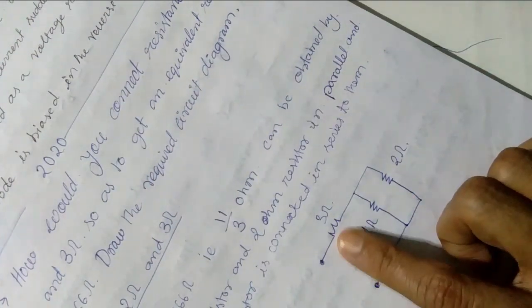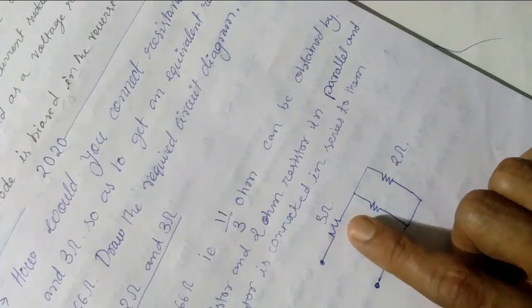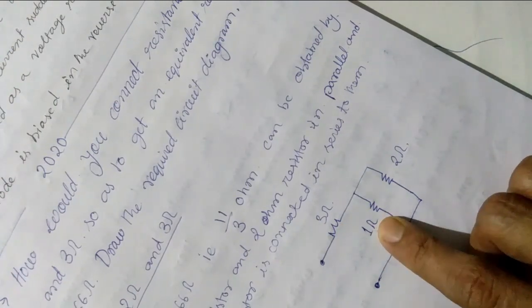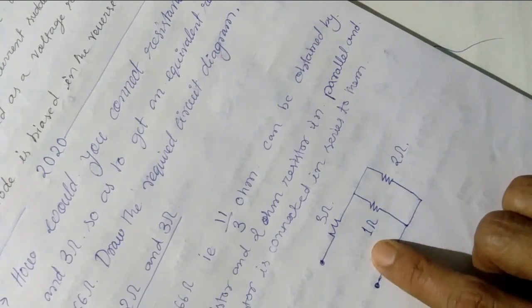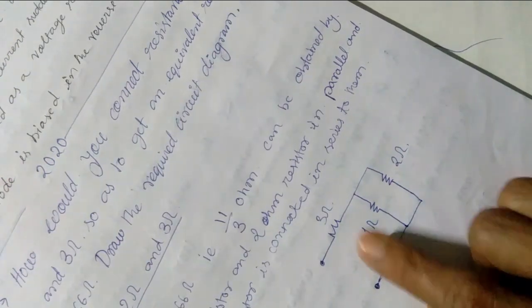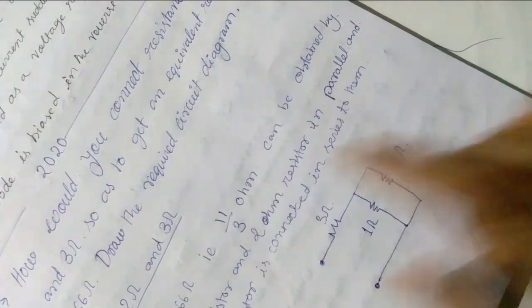So we are connecting 3 ohm resistance in series with the 2, 1 ohm and 2 ohm that are in parallel. So we can obtain the resultant to be 11 by 3 ohm like this.